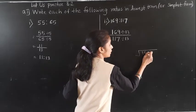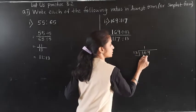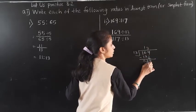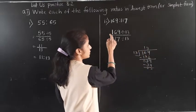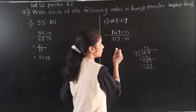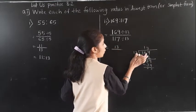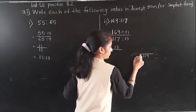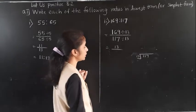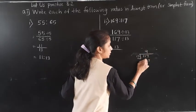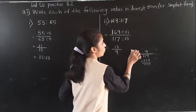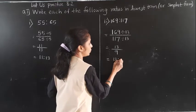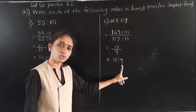169 divided by 13: 13 ones are 13, bring down 39, 13 threes are 39, so we get 13. Now 117 divided by 13: 13 nines are 117, so we get 9. So the result is 13 upon 9, which means the ratio is 13 to 9.